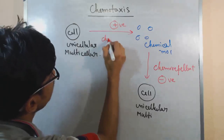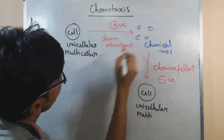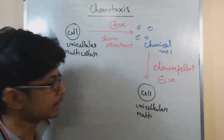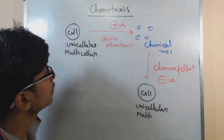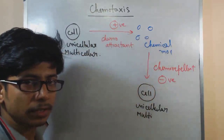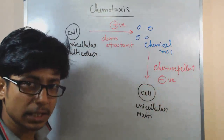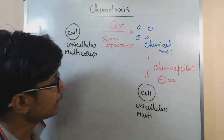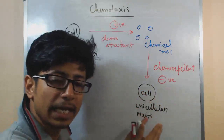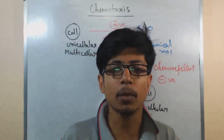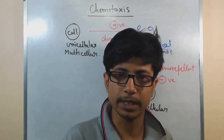Chemo repellent is the negative form of chemotaxis, while chemoattractant is the positive type. These are the two types of chemotaxis that are possible. Based on the attractivity, either the cell is attracted towards the chemical molecule or it moves away from it. In either way, this is chemotaxis, because the movement of the cell is driven by the concentration of chemical molecules present outside that cell.